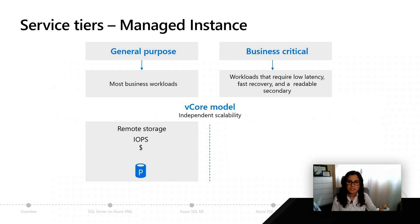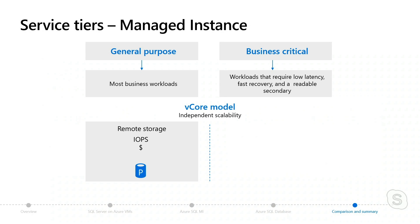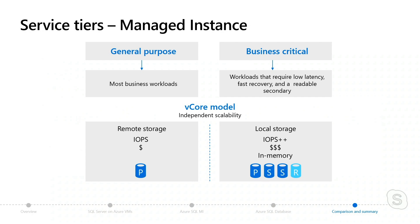When we talk about general purpose, your data and log files are going to be stored in remote storage, where your TempDB is going to be running on local SSD. To compare that with business critical, everything is going to be running on local SSD. When we talk about IOPS — IO per second — you're going to get better IOPS from business critical. Additionally, in-memory OLTP is only available in the business critical tier, so if that's something your application or workload requires, you're definitely going to want to consider the business critical tier.